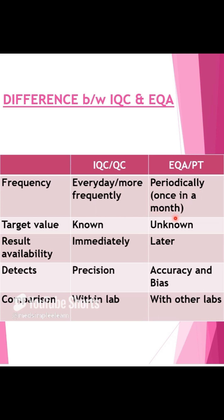The second important difference is target value. For IQC, the target value is already known when we are running the IQC sample. While in the case of an EQA sample, the value is not known to the user when the sample is being run — it is only available after the results are provided by the provider.